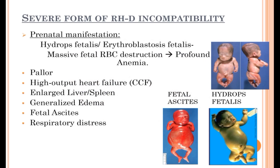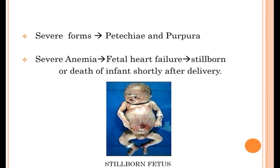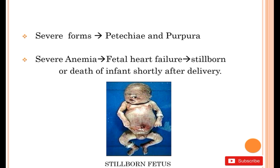Severe form of RHD incompatibility presents with prenatal manifestations like hydrops fetalis or erythroblastosis fetalis, in which massive fetal RBC destruction causes profound anemia. Clinical features include pallor, high output heart failure, enlarged liver or spleen, generalized edema, fetal ascites, respiratory distress, and severe forms of petechiae and purpura. Severe anemia causes fetal heart failure, which may lead to a stillborn or death of the infant shortly after delivery.